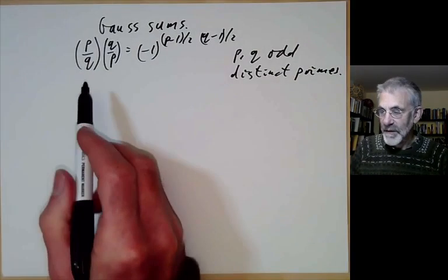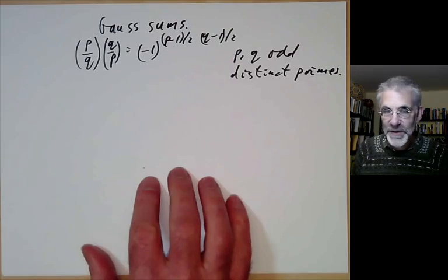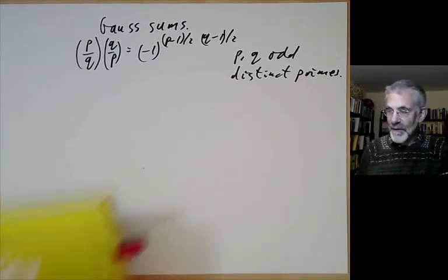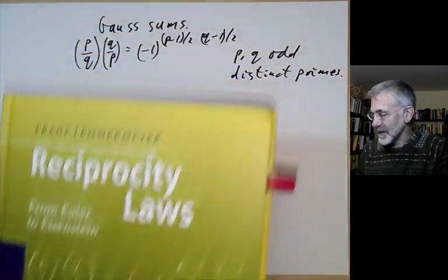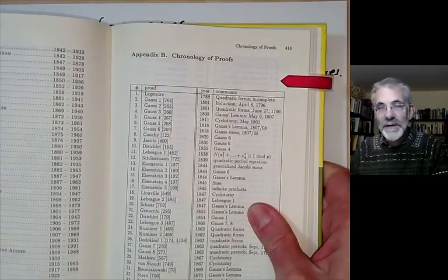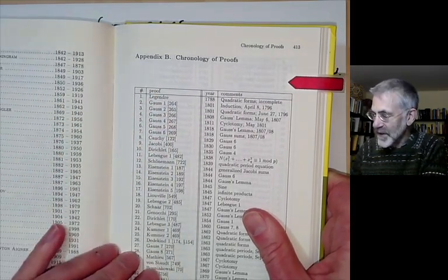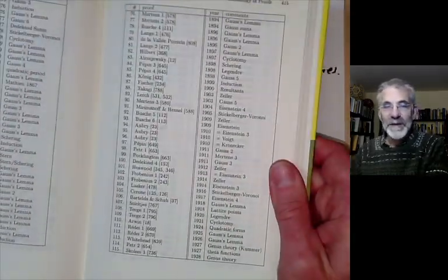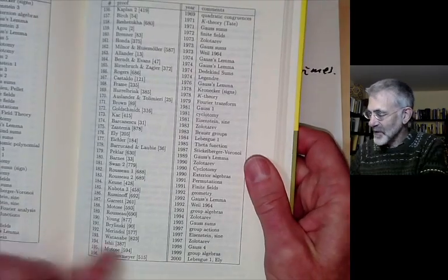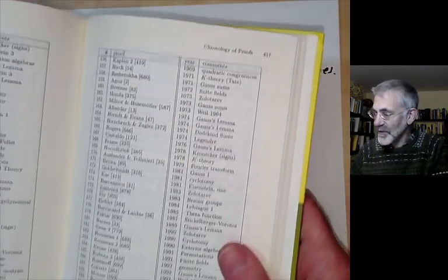Last lecture we gave a proof of this, and there are something like 300 proofs of the quadratic reciprocity law, so we're going to give a second one. You can see a list of many of them in the book by Lemmermeyer on reciprocity laws — the pictures are Euler and Eisenstein. In the back of the book he lists the first six proofs by Gauss; Legendre's proof wasn't actually complete, so Gauss has the first proof. The list ends in the year 2000, with a couple of hundred listed, and in fact he lists about 300 proofs in another book.